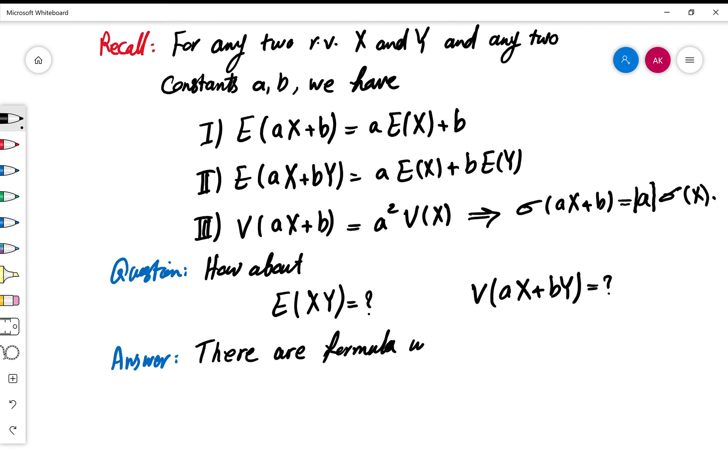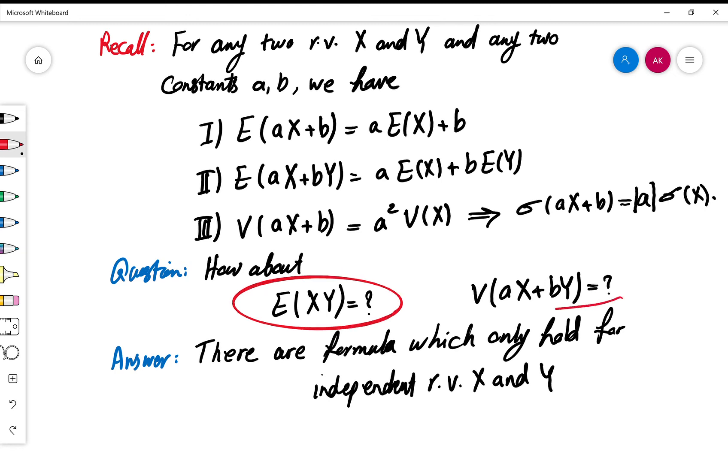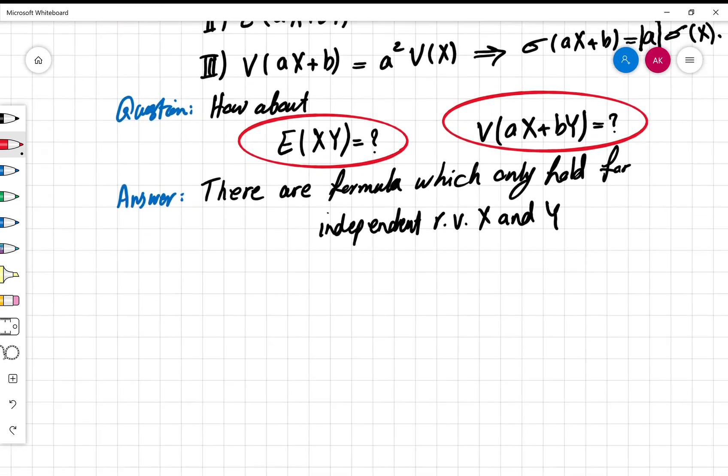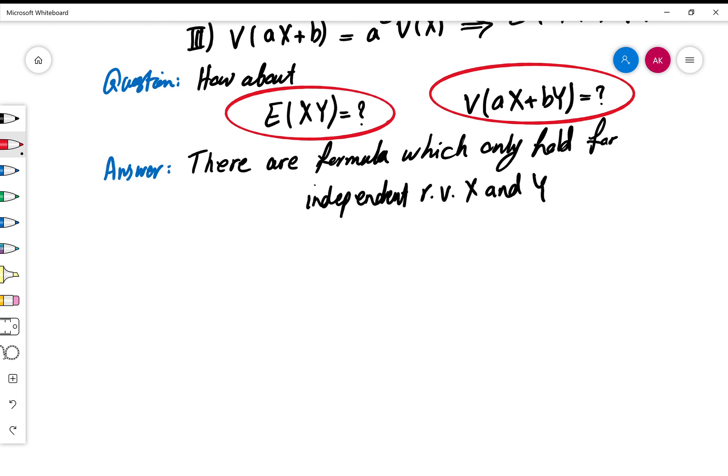Well the answer for this question is that there are formulas which only hold for independent random variables X and Y. So we will have formulas for E(XY) and V(aX+bY), but only for the random variables X, Y which are independent.